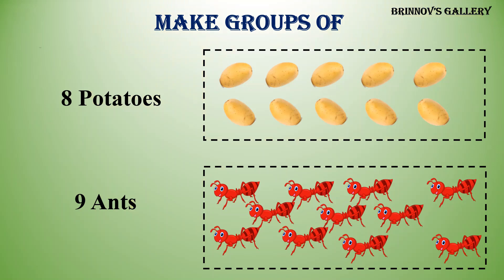Make groups of 8 potatoes. 1, 2, 3, 4, 5, 6, 7, 8. 9 ants. 1, 2, 3, 4, 5, 6, 7, 8, 9.